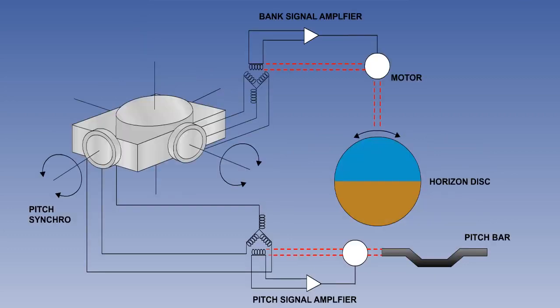A further development of the gyro horizon is the vertical gyro unit, which can also be known as the vertical axis gyro, the remote vertical gyro, or the vertically axis data generation unit. In the vertical gyro unit, the gyro is a remote gyro which operates a synchro system to generate and transmit attitude signals to a steering computer and to an amplifier unit.